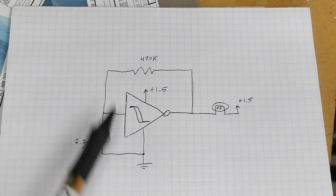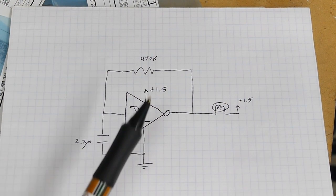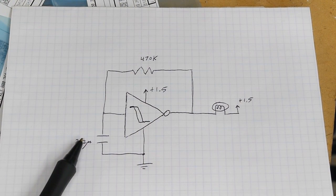So the trick with a Schmidt trigger is that the switching point changes depending what the output is. If the output is high that means the switching point is suddenly quite a bit lower than it used to be. It's a type of positive feedback or hysteresis.